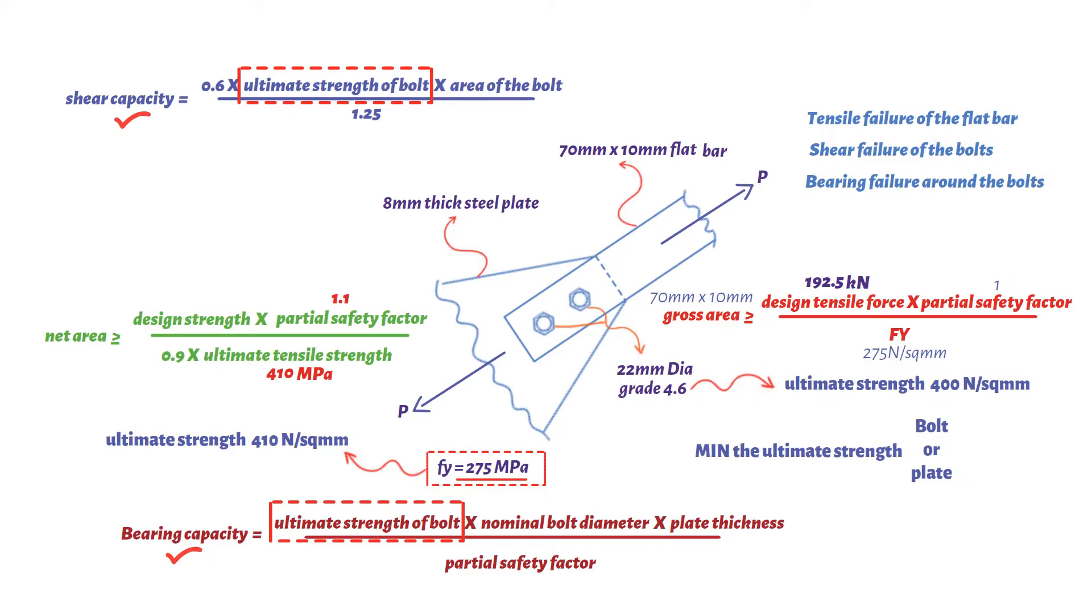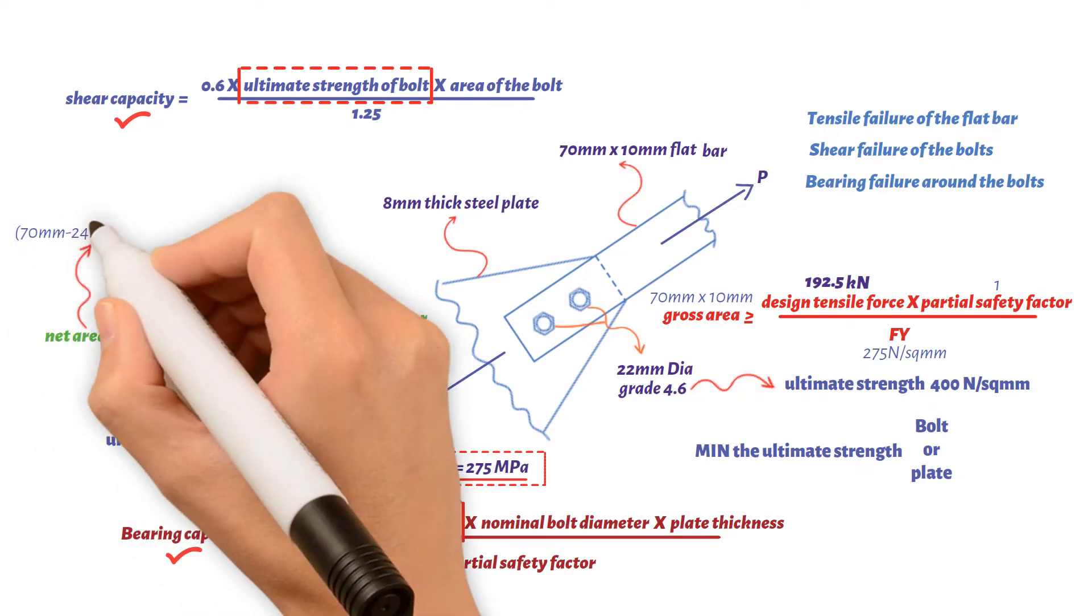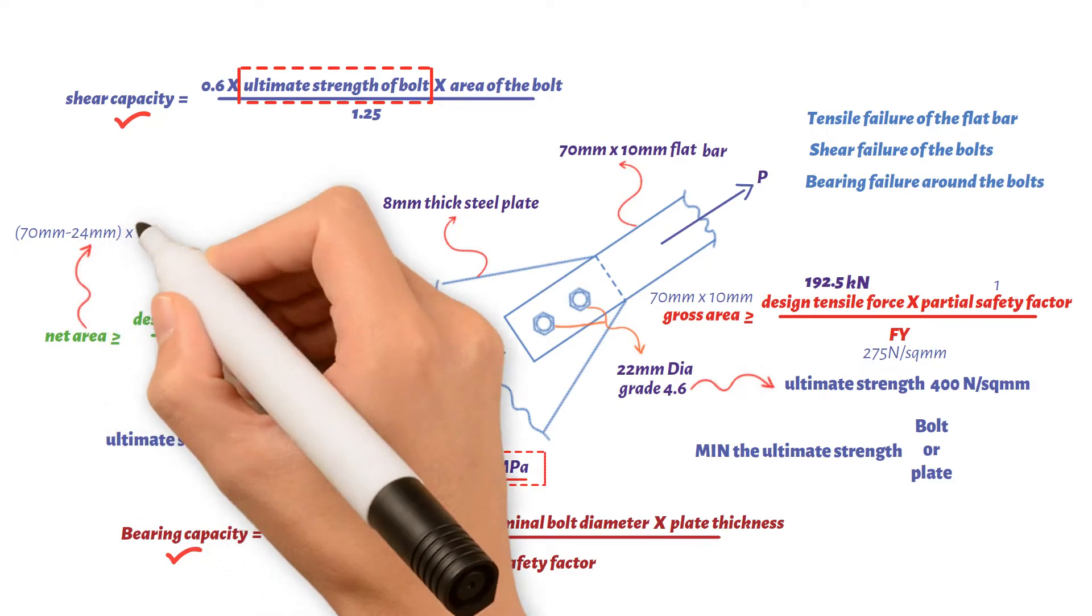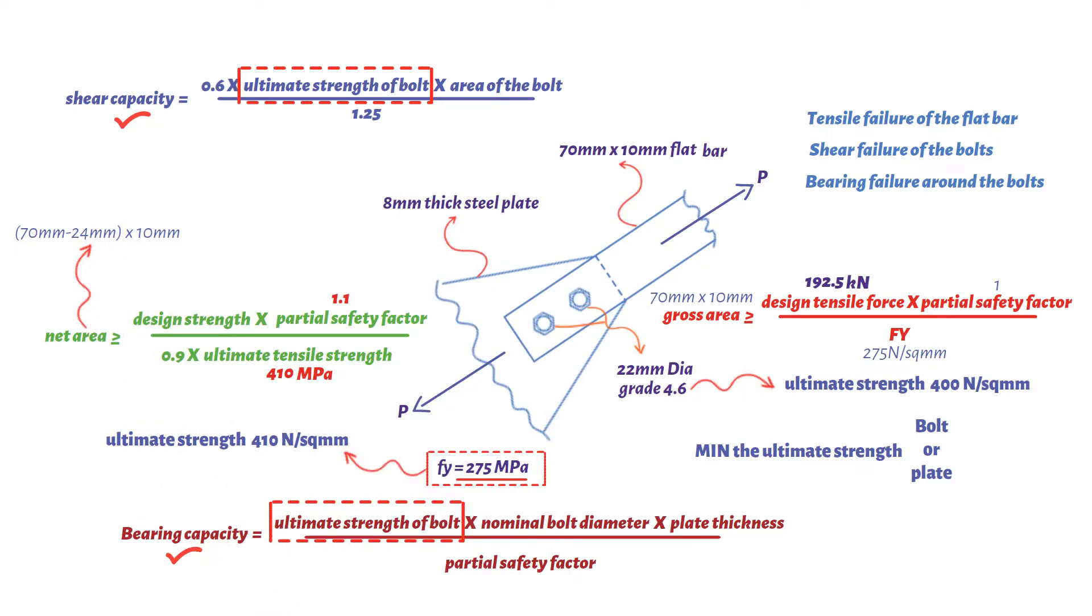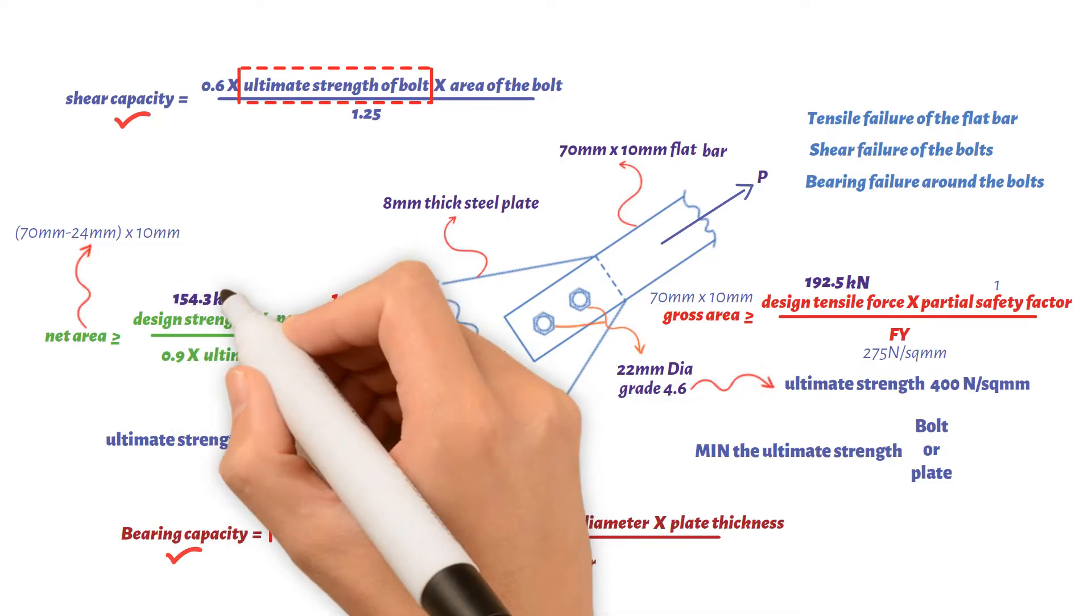Based on net area of tie equation, design force would be net area, which is 70 millimeters minus diameter holes 24 millimeters multiplied by 10 millimeters multiplied by 0.9 multiplied by 410 newton per square millimeters divided by 1.1 divided by 1000. This results in a value of 154.3 kilonewtons.